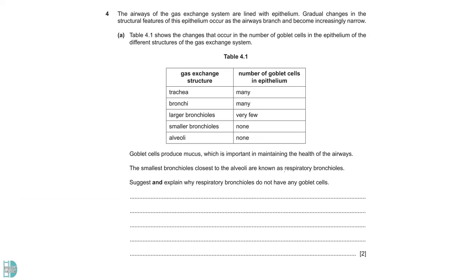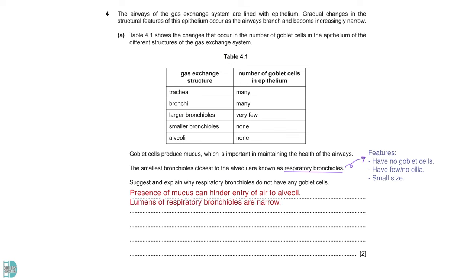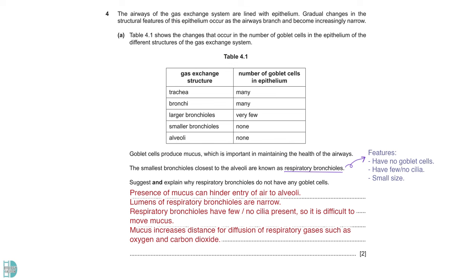Question 4 is about the airways of gas exchange system. You have a table showing you the number of goblet cells in epithelium of different airways. The function of goblet cells is mentioned here. You need to suggest and explain why respiratory bronchioles do not have any goblet cells. You have to remember the structure of bronchioles in order to answer this question. Apart from having no goblet cells, respiratory bronchioles have little to no ciliated epithelial cells as well, and it has a very small size. The presence of mucus here can hinder the entry of air to alveoli, as the lumens of respiratory bronchioles are very narrow. Since they are few or no cilia present, it is very difficult to move mucus in this section. If mucus is found here, it will increase the distance for diffusion of respiratory gases for example, oxygen and carbon dioxide. It will also increase the risk of infection because of the trapped pathogens.